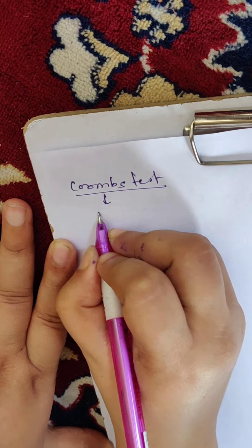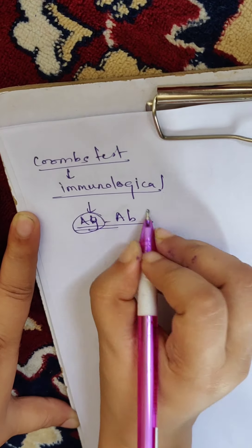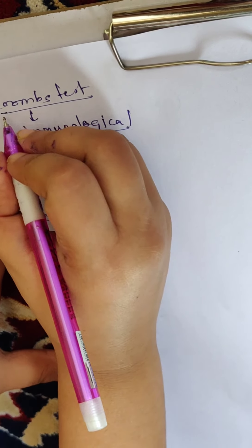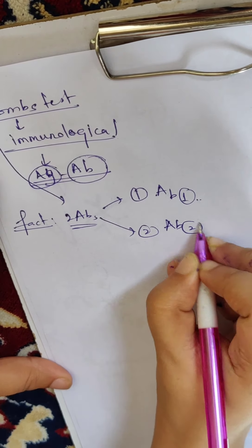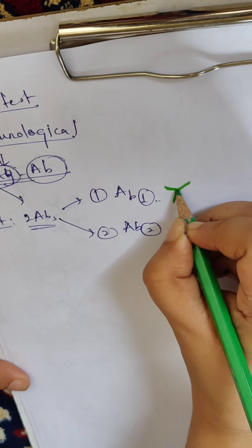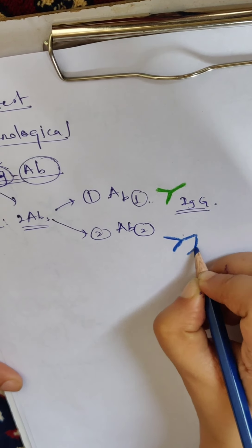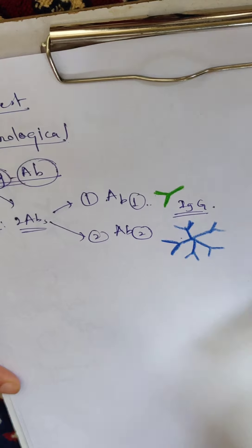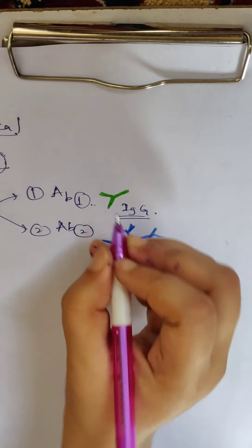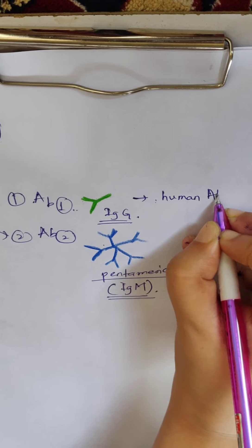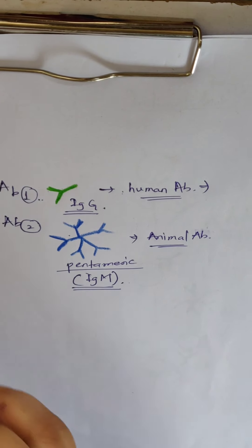Coombs test is an immunological reaction, that means antigen-antibody interaction. Now I will tell you a fact: in Coombs test, there are two antibodies involved. The first antibody — I denote it with green colour — is generally an IgG type antibody. The second antibody — denoted with blue colour — is pentameric in nature, an IgM type antibody. The first antibody is generally the human antibody, and the second one is an animal-derived antibody.